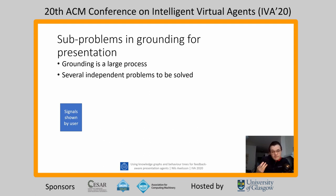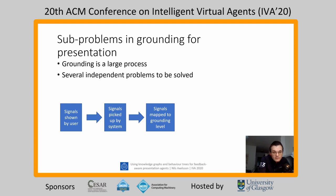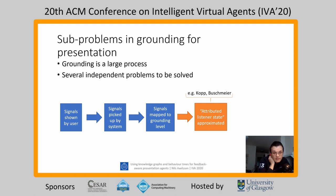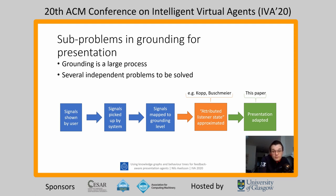The process really starts when the user — the audience — gives some feedback. We can't control this, but we can pick it up on our sensors. We use a Clark grounding model, so we have to map this provided feedback to some grounding level. We then combine this classified feedback with what we already know about the user's state of mind to create their new state of mind. Kopp and Buschmayer called this the attributed listener state. This paper is mostly concerned with taking the attributed listener state and using it to adapt the presentation.